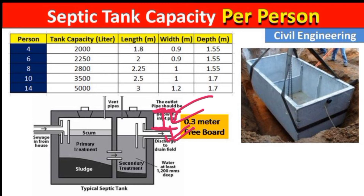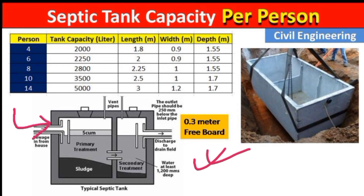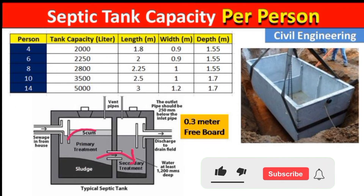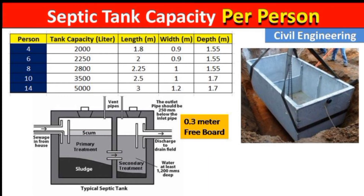Now let us discuss the structure of the septic tank. When sewage comes in and enters the first compartment, the solid particles remain at the bottom. The wastewater then goes to the secondary compartment. This is known as primary treatment in the first compartment and secondary treatment in the second compartment. After that, the water maintains its own level.